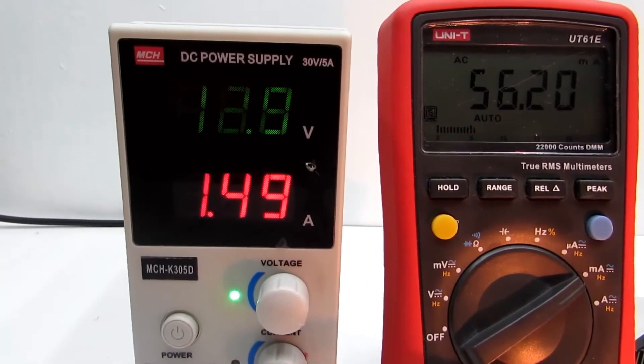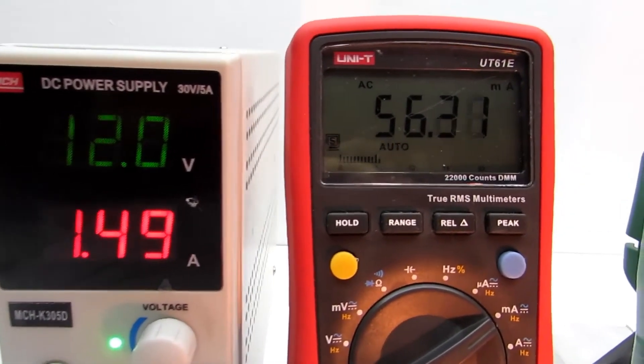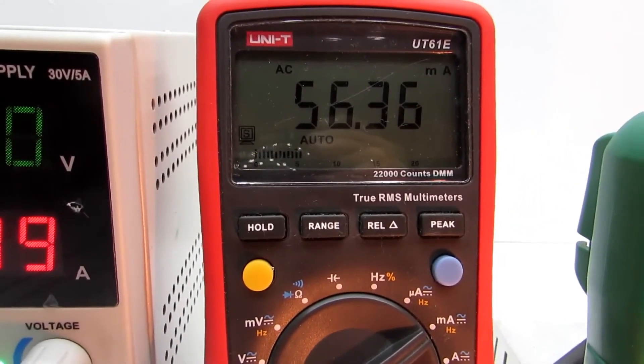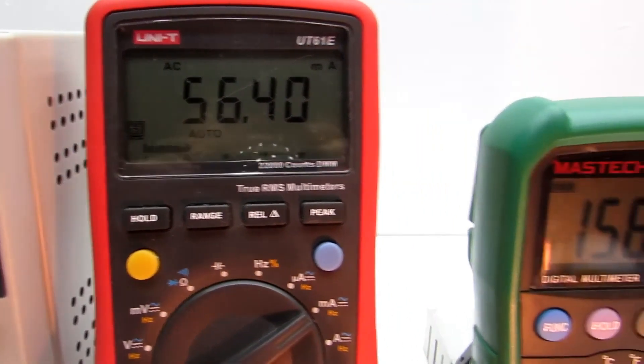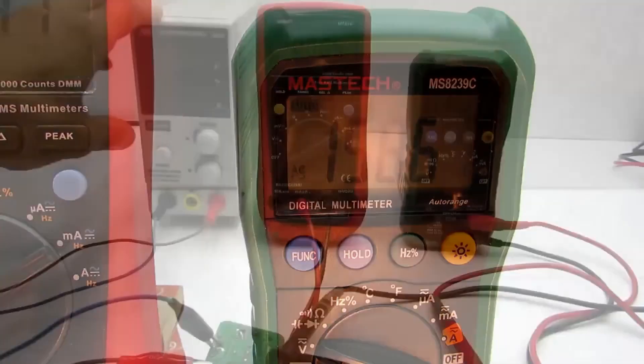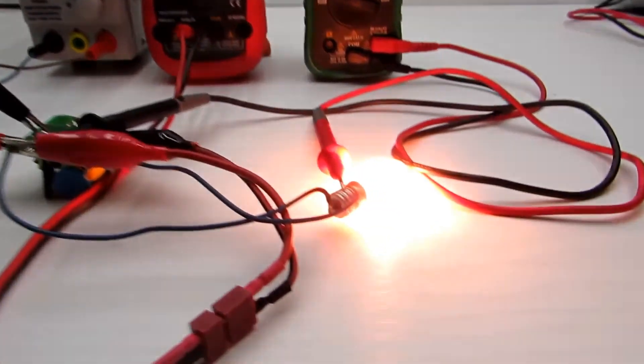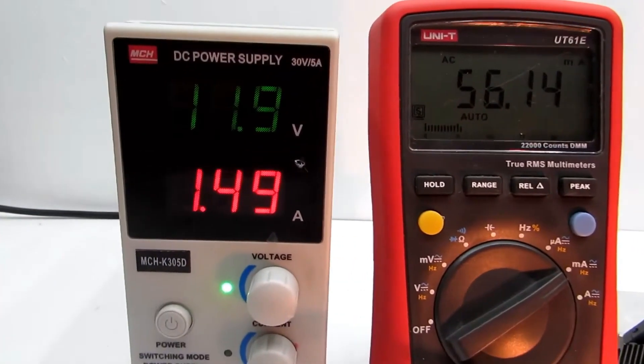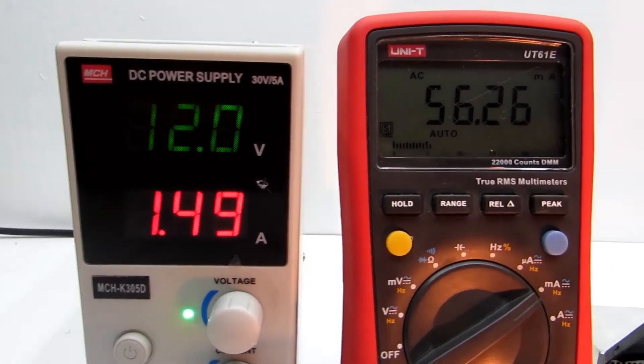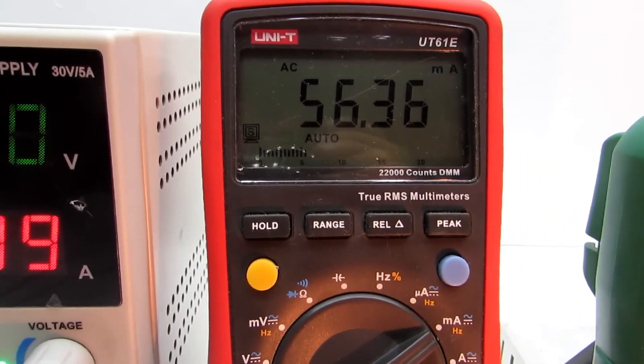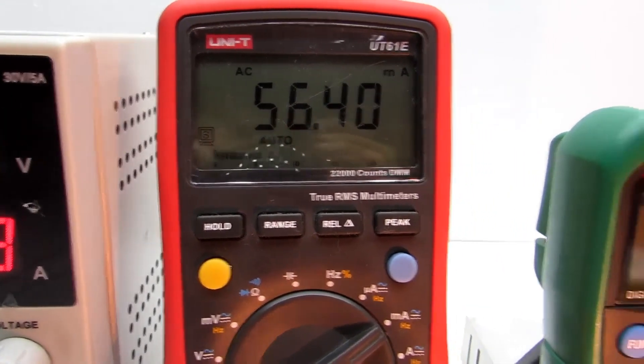On the laboratory power supply, we see the input parameters. On the multimeter unit, the output current. The Mastige multimeter shows the output voltage under load. The input current at a voltage of 12 volts is about an amp. The output current is 56 mA at a voltage of 160 volts. This proves that the inverter cannot provide the claimed power.